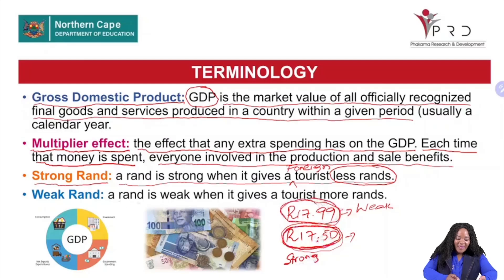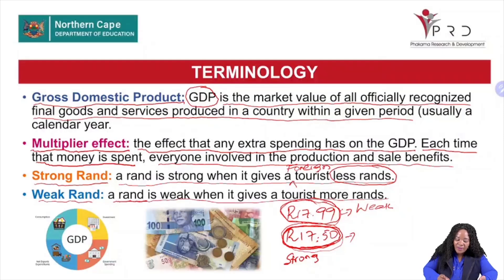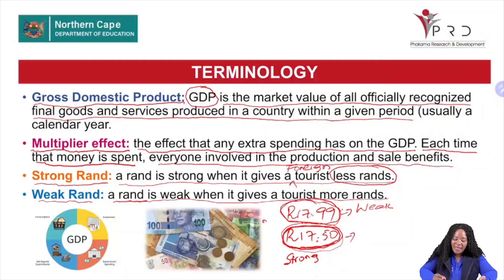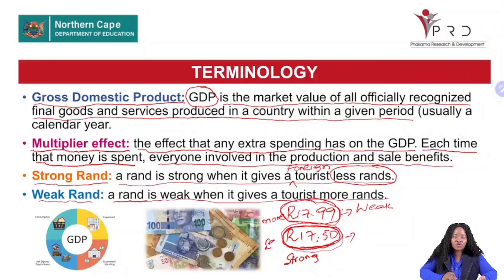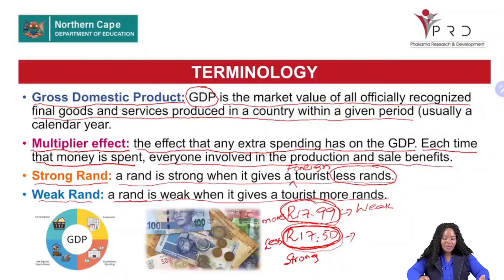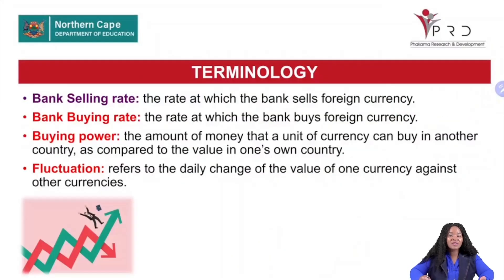A rand is weak when it gives the tourist more rands. The 17.99 rate gives tourists more rands — the rand is weak. The 17.50 rate gives tourists fewer rands — the rand is strong. I hope you are getting what I'm trying to explain.